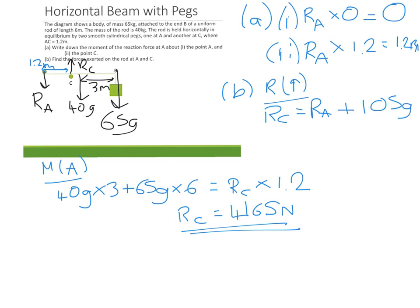Now we can sub that into our formula above. This resolve vertically formula. And that's going to give us our RA value. So if we subtract 105 times 9.8 from what RC is, that's going to give us our RA value, which is 3,136 Newtons. And that's that question done.